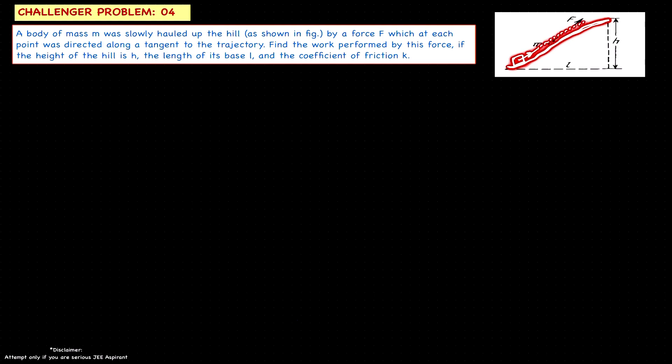Here, the object is slowly taken from this point to the top by applying force F. This hill is rough and the coefficient of friction is K. We have to find the work done by F in taking this object from here to its top point. This path is not straight — it is a curved path. The length of the base is L and this height is H.